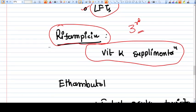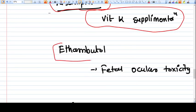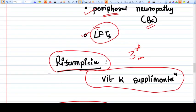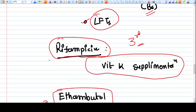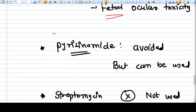Ethambutol is again a good drug, but still there is a hypothesis of fetal ocular toxicity. So ethambutol can be avoided if the disease is controlled by isoniazide and rifampicin only.